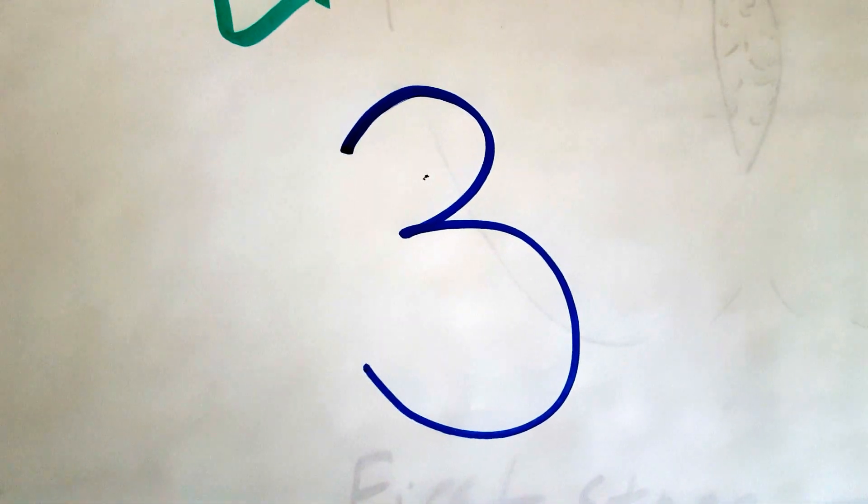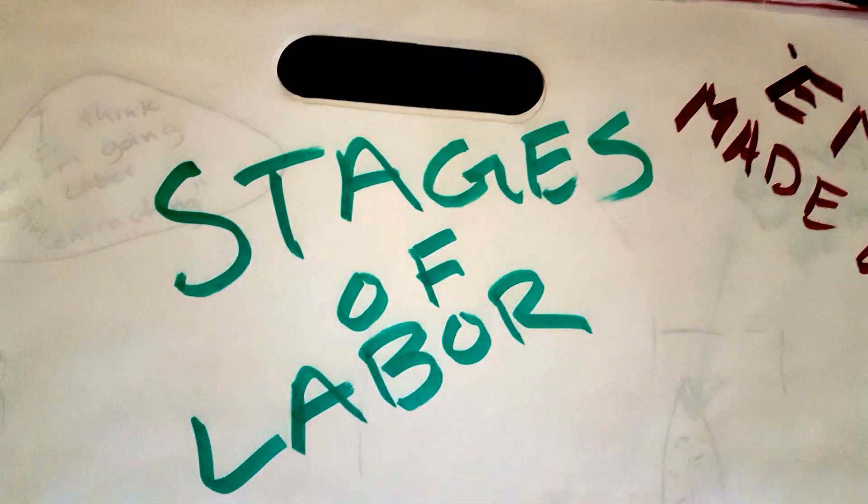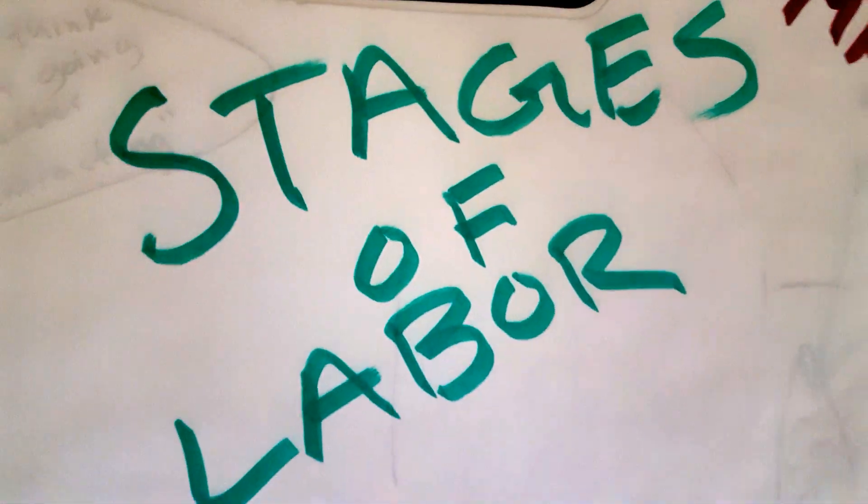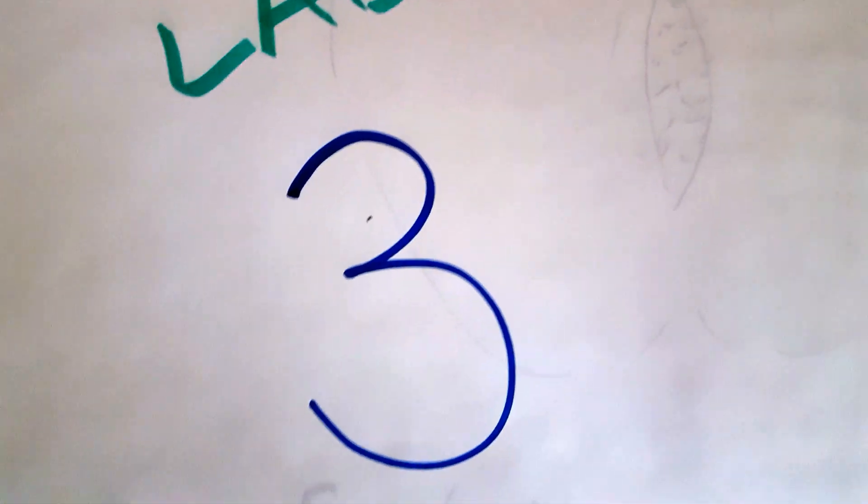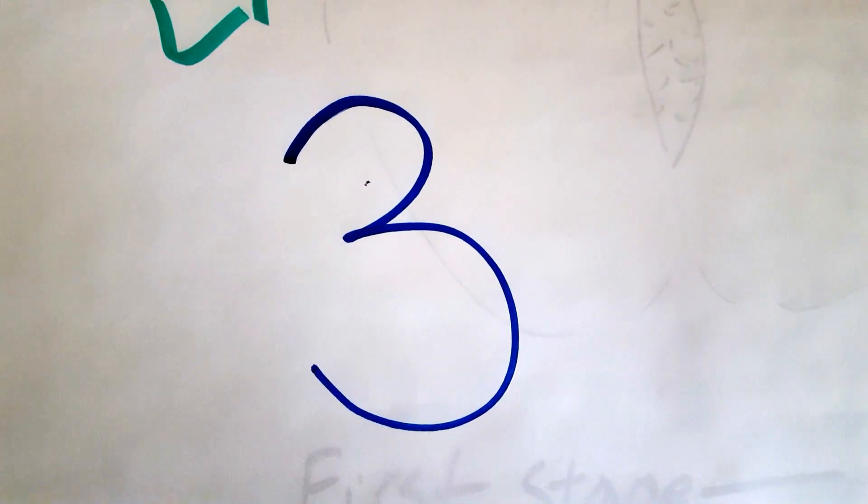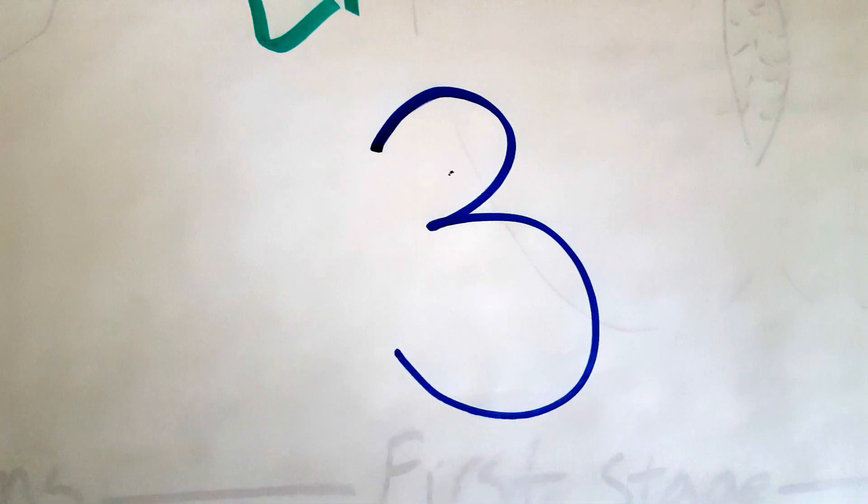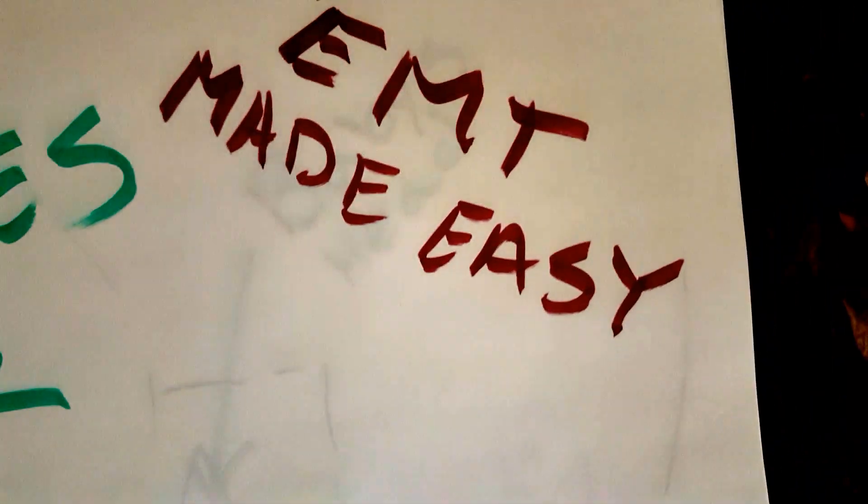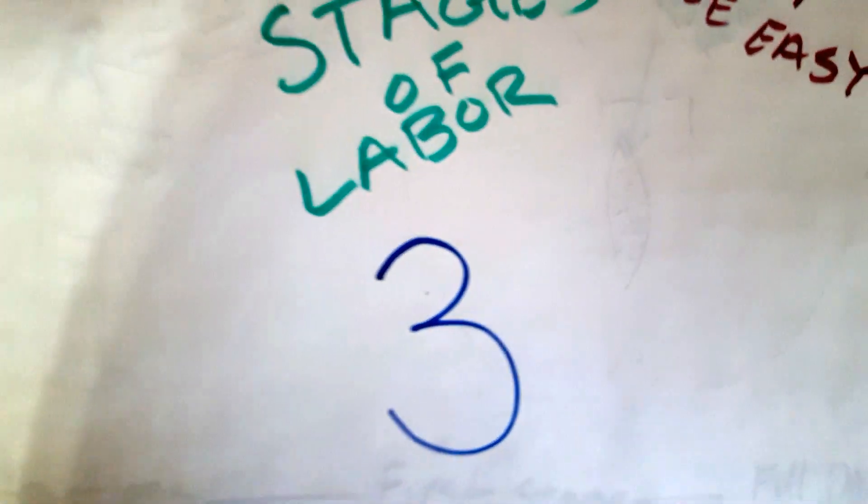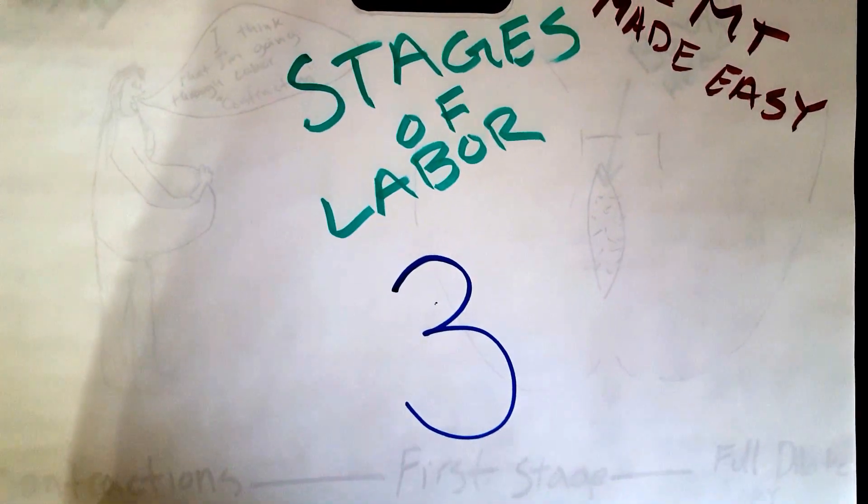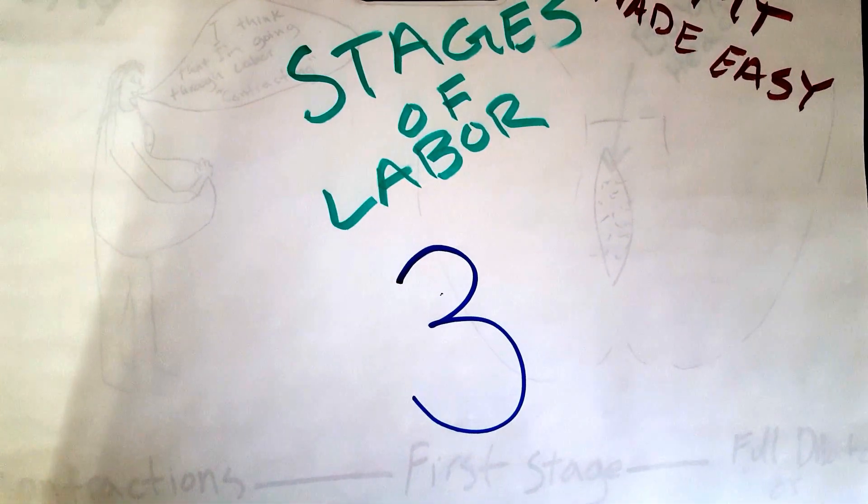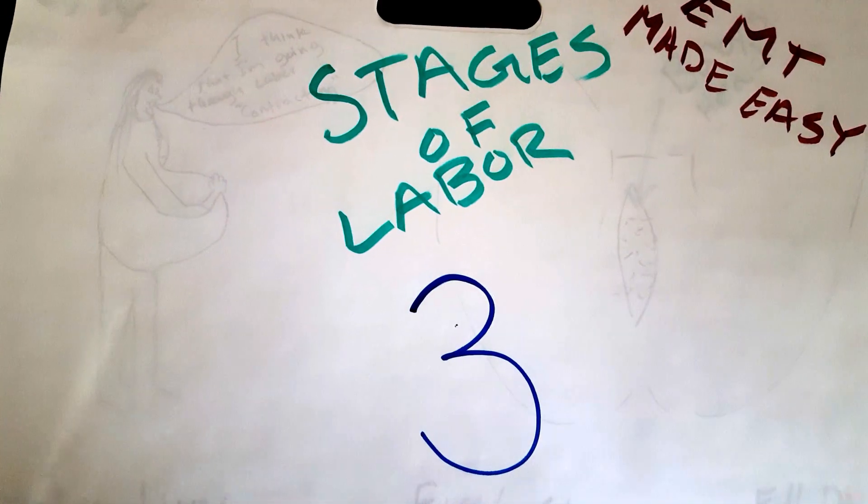There are three stages to labor from start to finish, from when the lady starts to contract to when the placenta and baby are delivered. I'm going to try to break this down and make it as simple as possible. If I miss anything or if you want some more explanation, just leave a comment below and I'll get back to you.